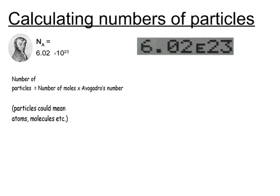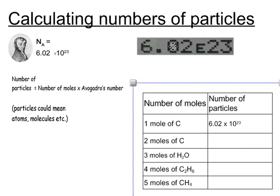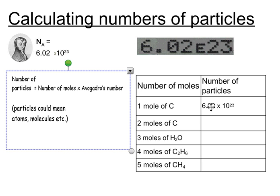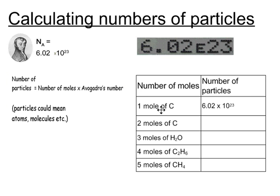So let's look at some examples. If you wanted to work out the number of particles of one mole of carbon, you would do one mole multiplied by Avogadro's number. That will be the answer. Why don't you pause the video and have a go at these using the equation?